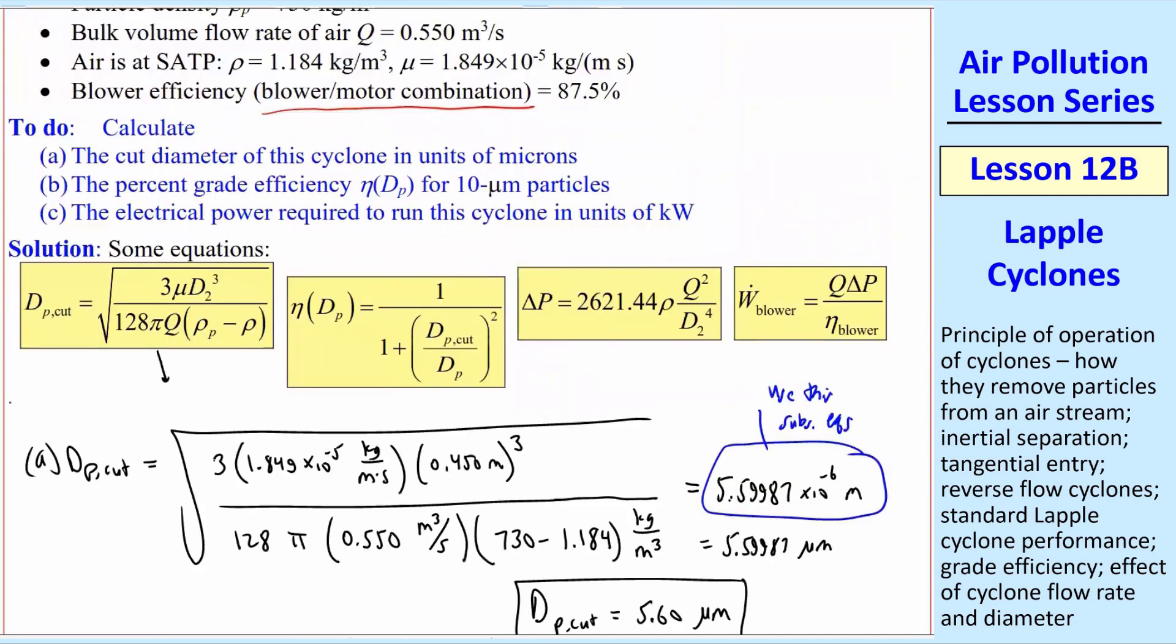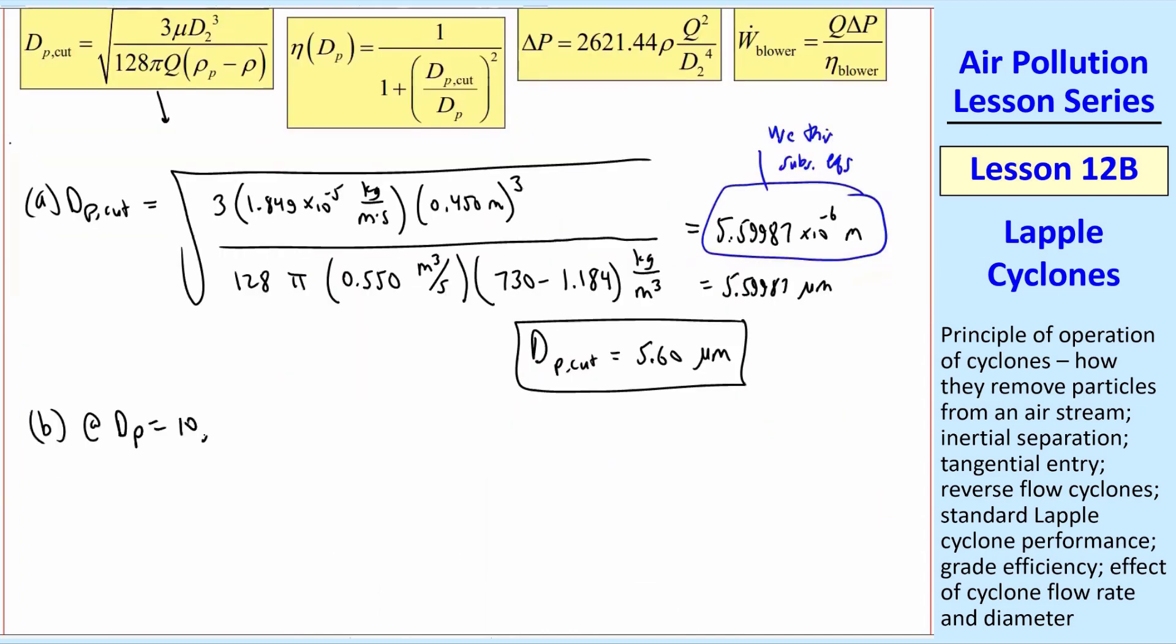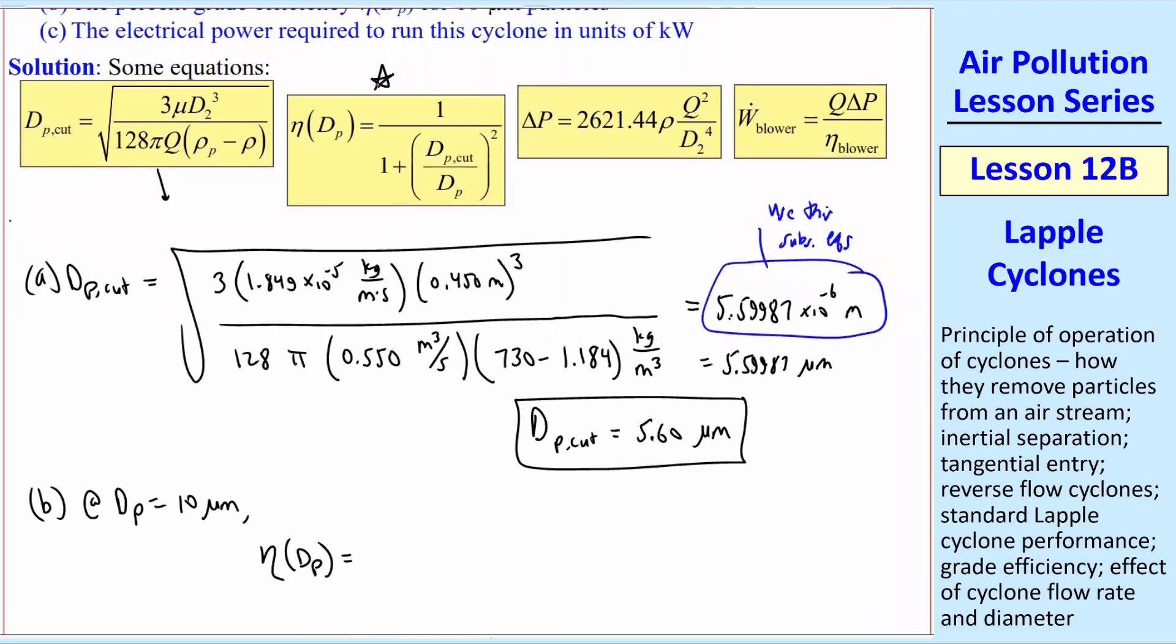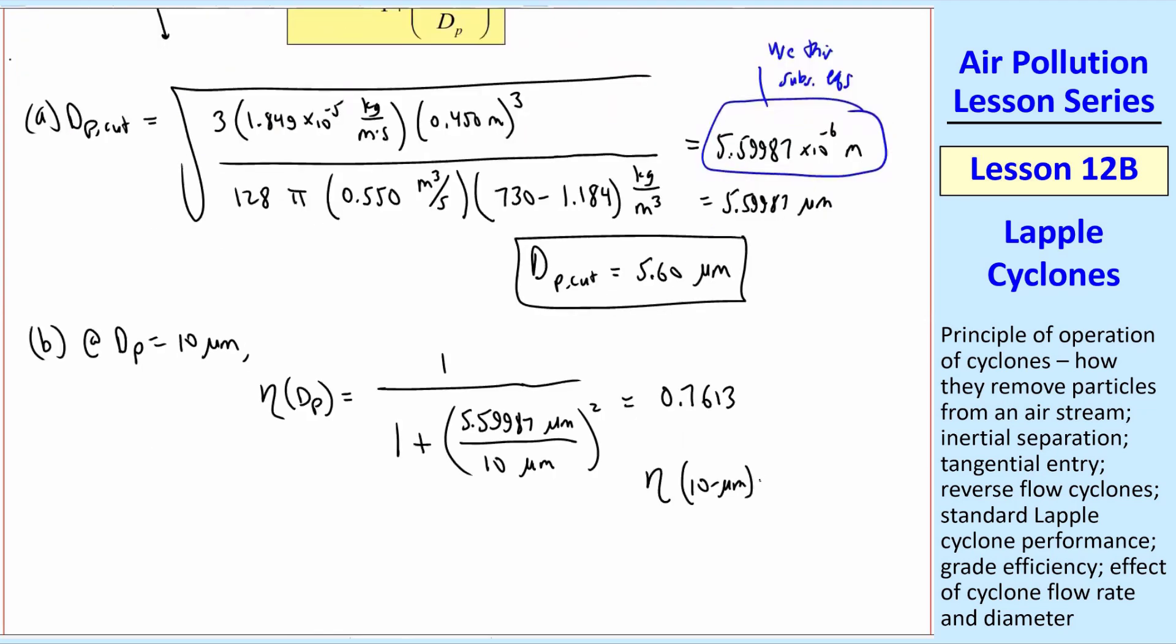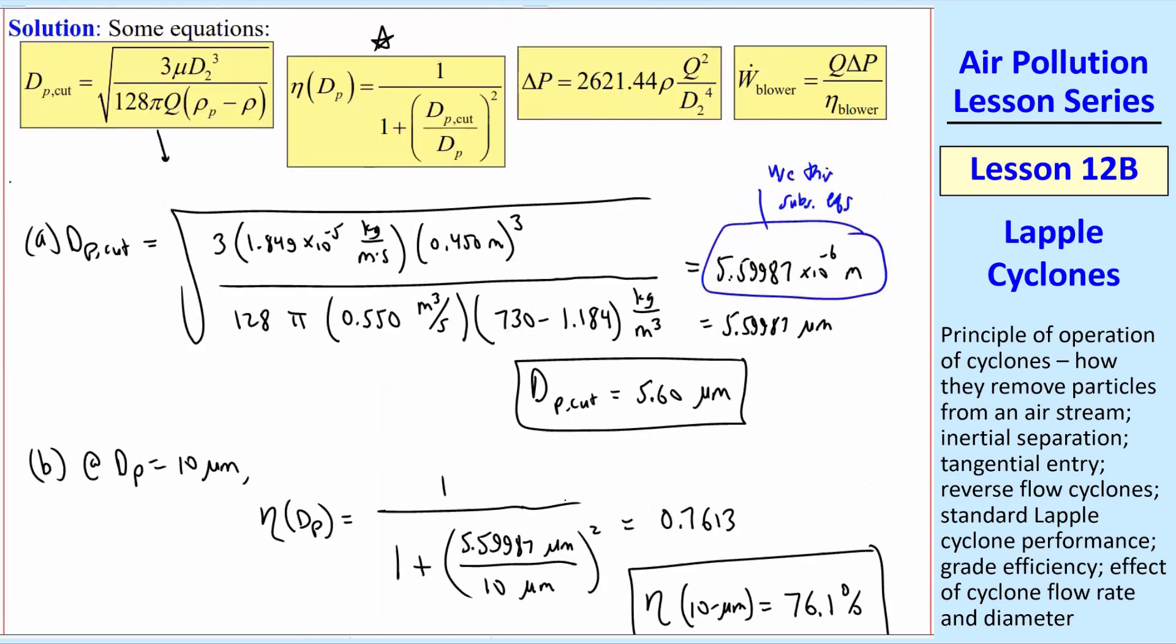Part B, the percent grade efficiency for 10 micron particles. So at DP equal to 10 micron, we calculate eta_DP, and that's using this equation then. So that's equal to 1 over 1 plus DP_cut over DP squared, and that turns out to be 0.7613. So eta at 10 microns in percent is 76.1%. So that would be my answer there.